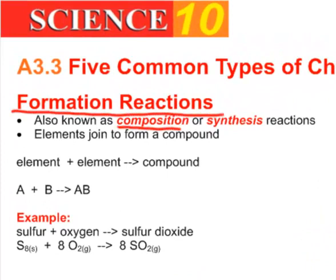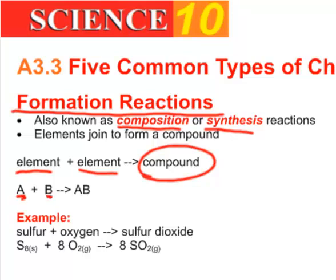It's also sometimes called a composition or a synthesis reaction because what you're doing here is you're putting together little tiny elements to make a compound. So we take one element, join it with another element and we make a compound. We might symbolize this by taking element A plus element B makes a compound called AB.